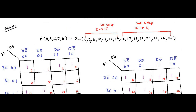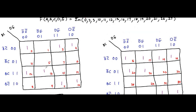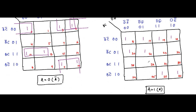We have mapped the values; now we will form the groups. For the first K-map, focus on cells 2, 3, 10, 11 — we can form a quad. Then focus on cells 0 and 2 — we can form a pair. Going to the second K-map, focus on cells 16, 17, 20, 21 — we can form a quad here.